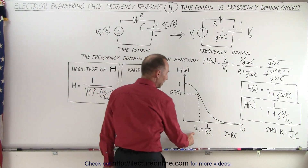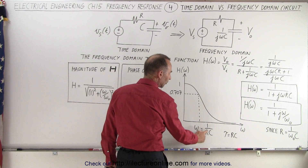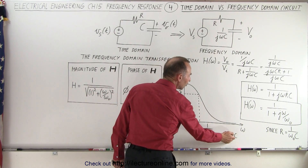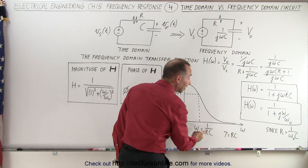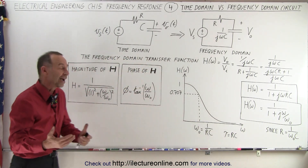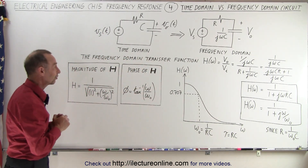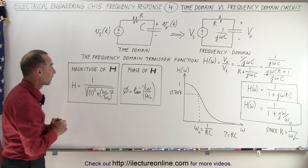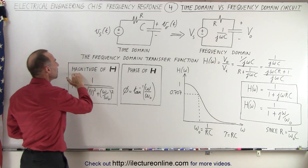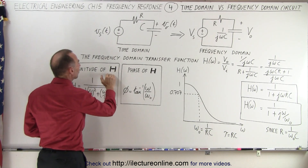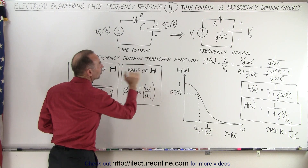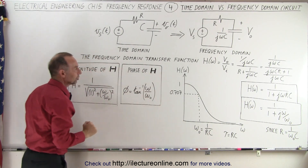Notice that if ω-sub-not is defined as 1 over RC, then the time constant is RC, so ω-sub-not is the inverse of the time constant of the circuit. We can also calculate the magnitude of the transfer function and the phase angle of the transfer function.